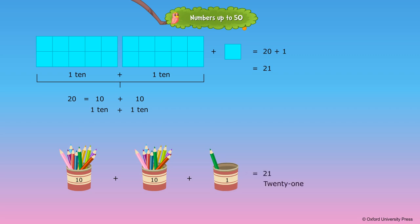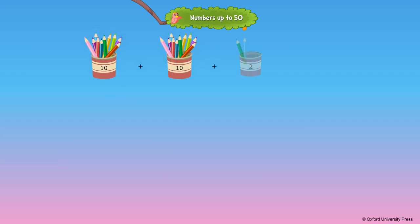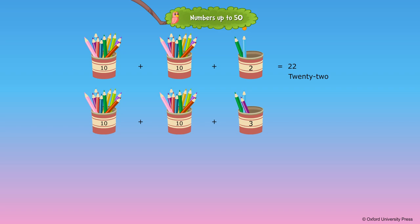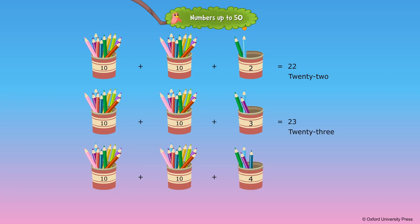20 plus 1 is equal to 21. 20 plus 2 is equal to 22. 20 plus 3 is equal to 23. 20 plus 4 is equal to 24.